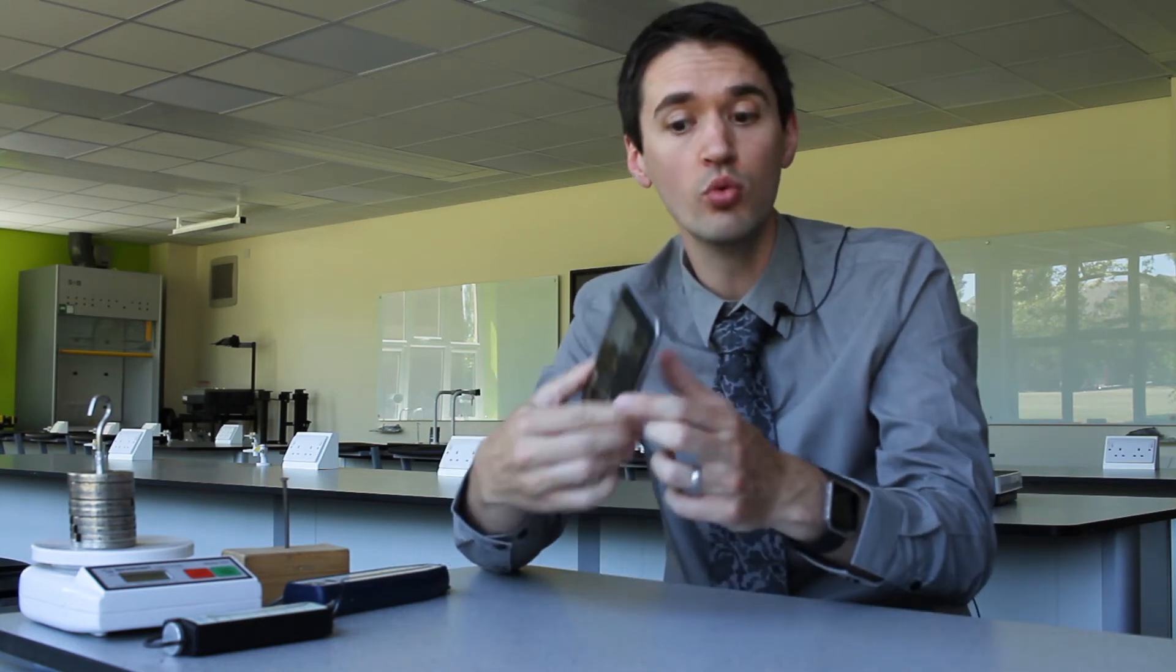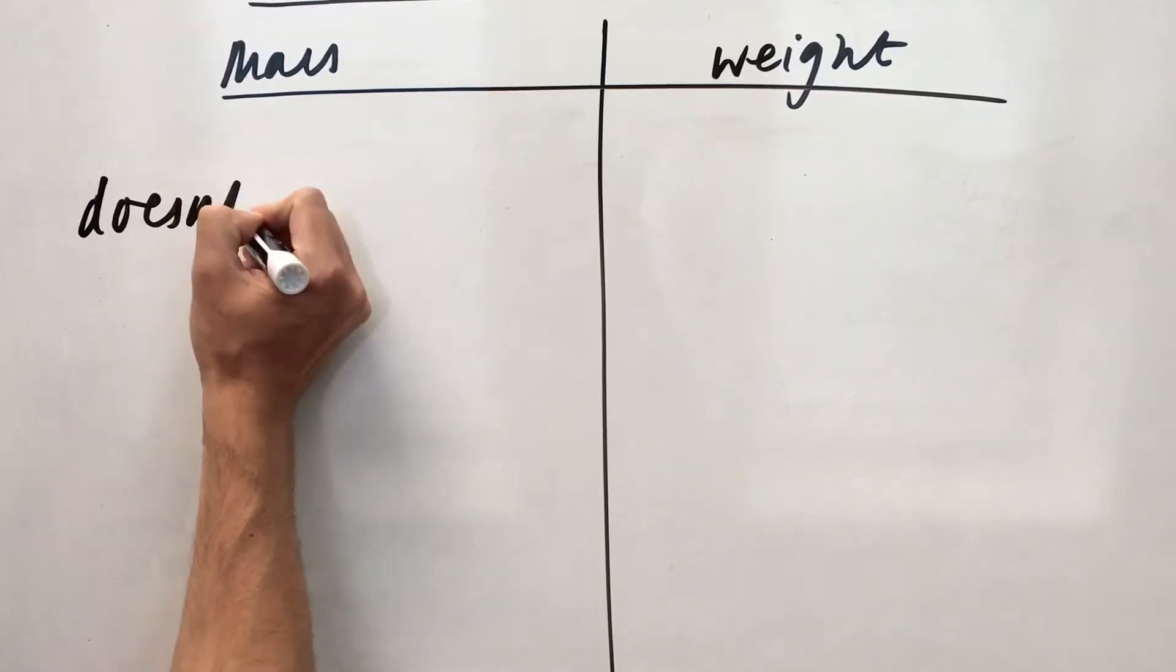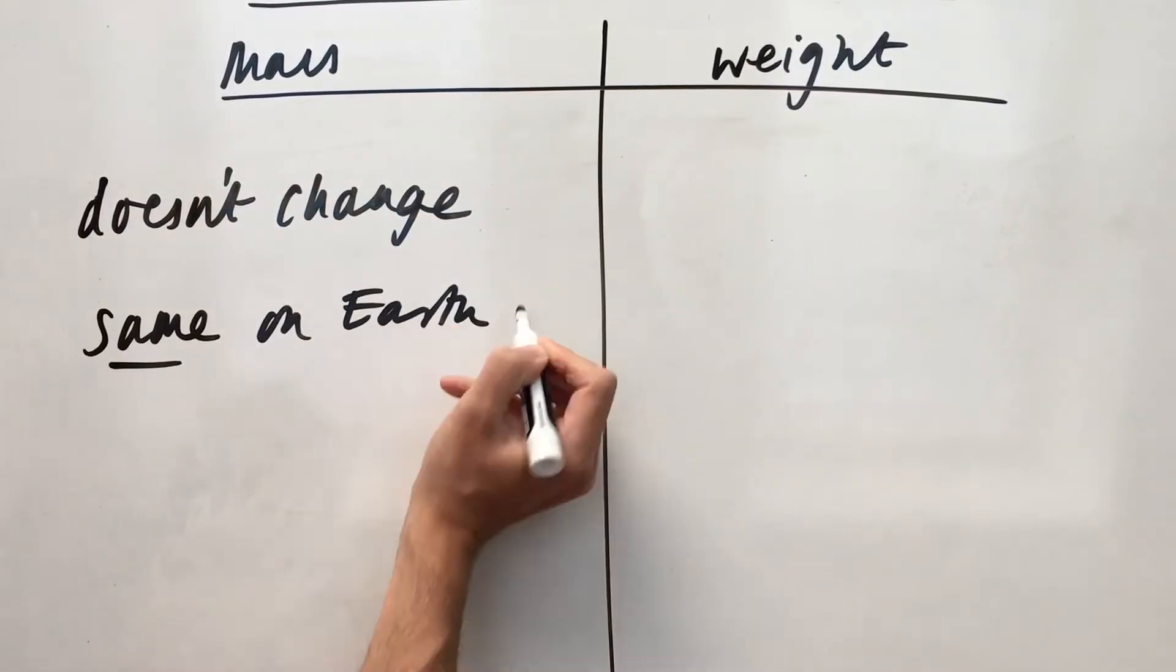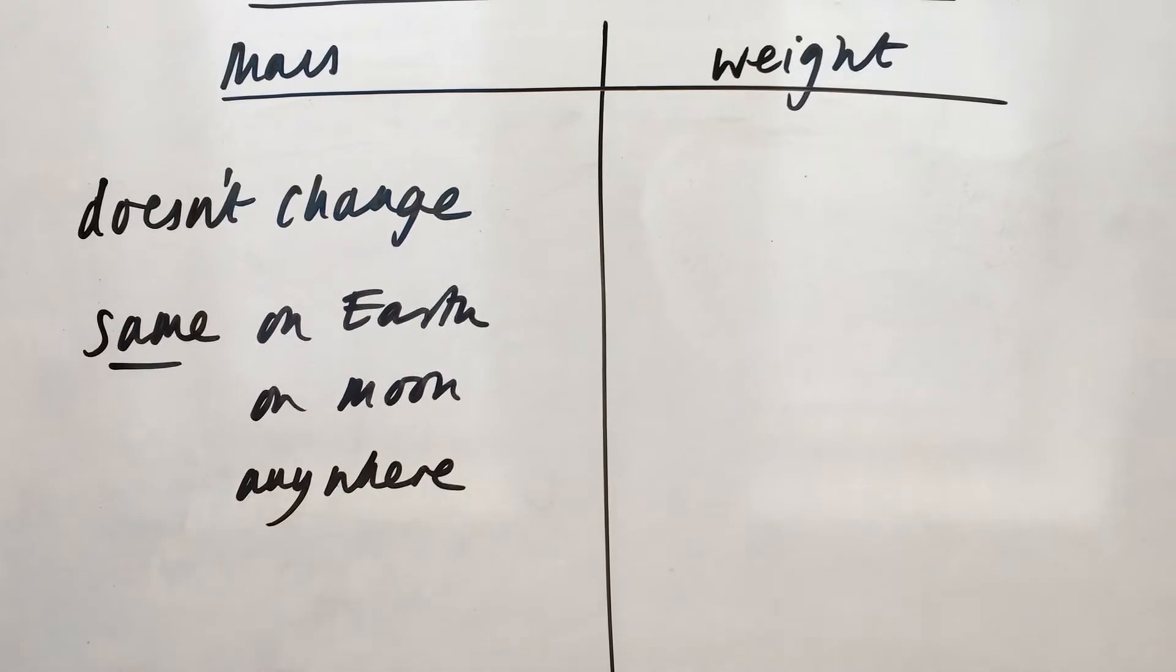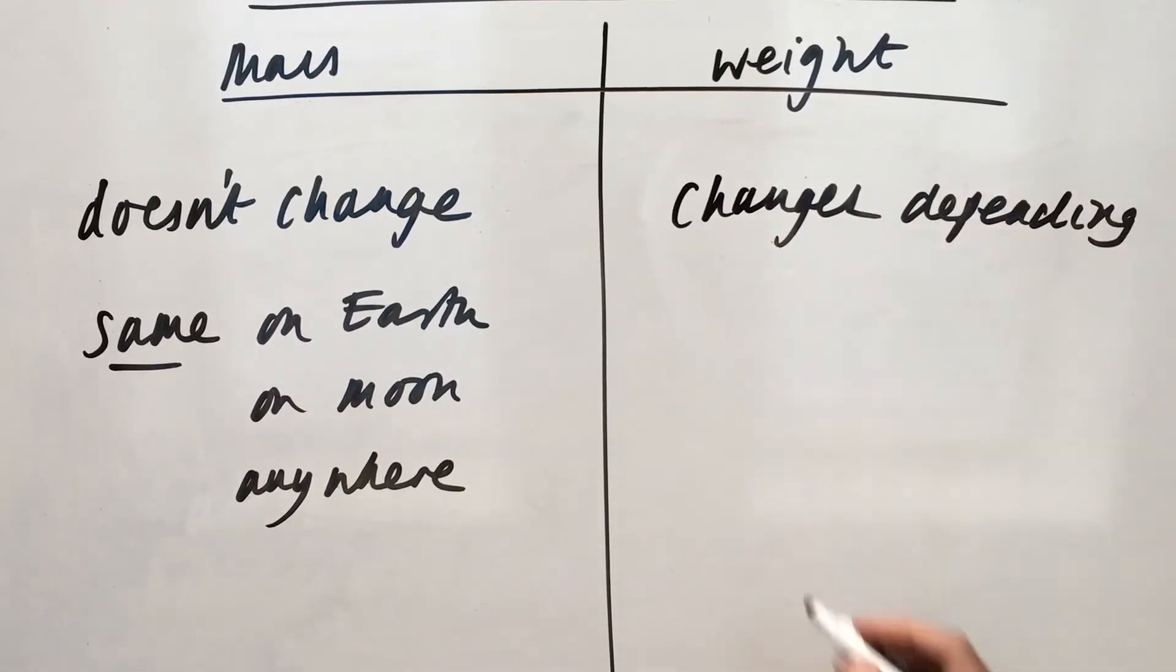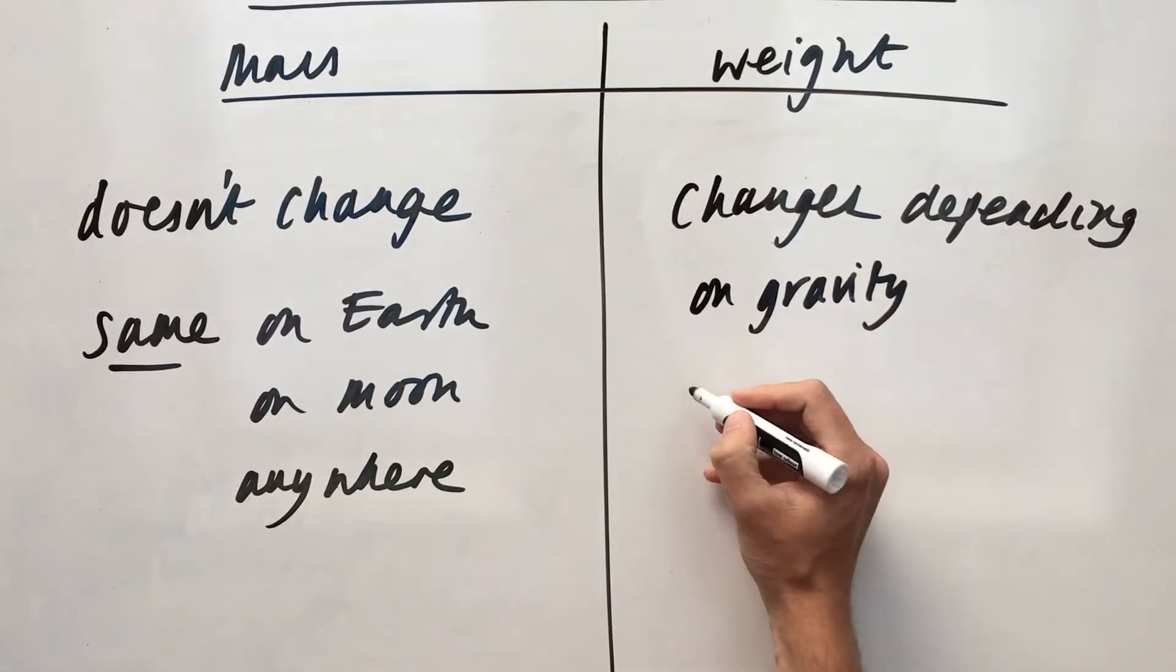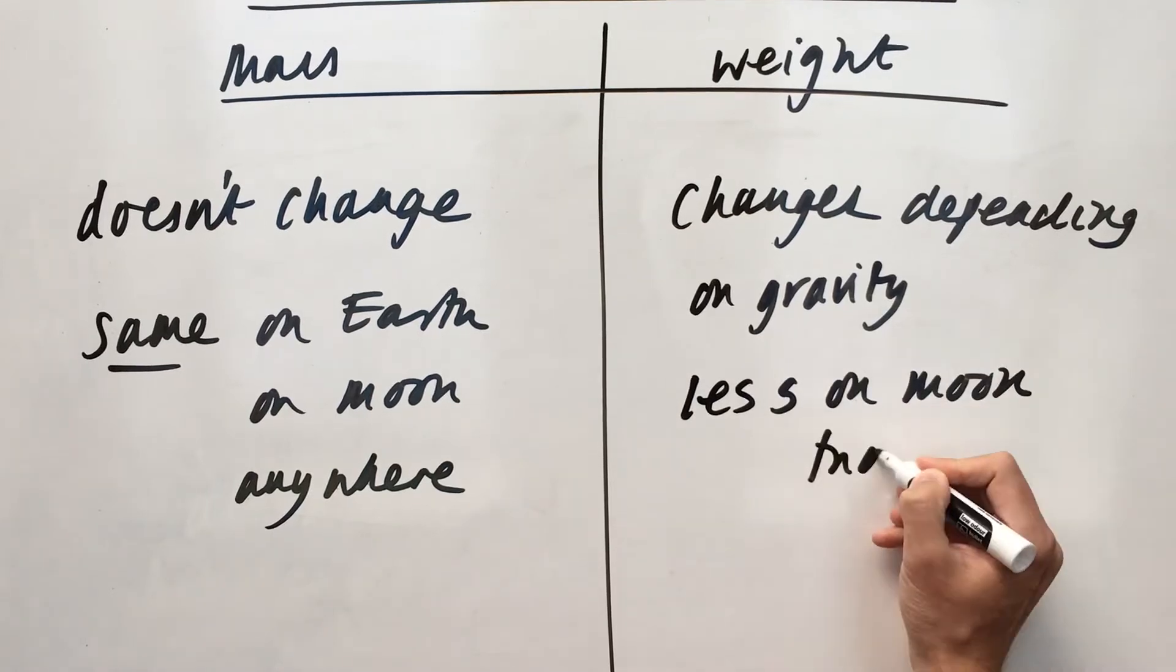So that should help us easily understand the next property, which is that the mass of this object won't change, depending on where it is in the universe. Take this phone to the Moon, it's still got the same mass. However, its weight will change. So it will have less weight on the Moon, because there's less gravity pulling it down.